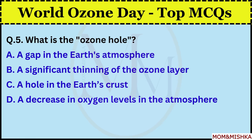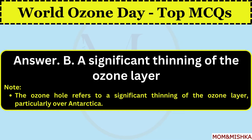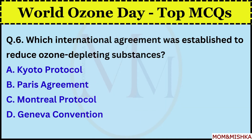What is the ozone hole? It's a significant thinning of the ozone layer. Option B. The ozone hole refers to a significant thinning of the ozone layer, particularly over Antarctica.